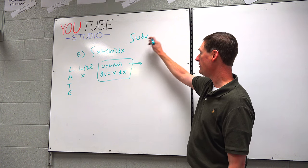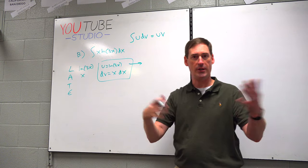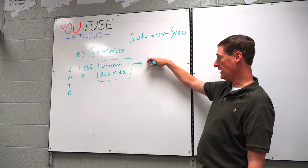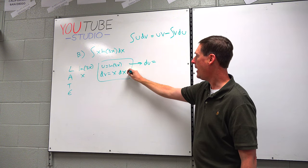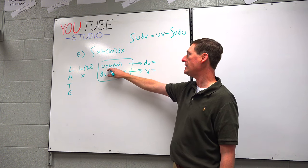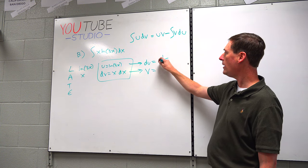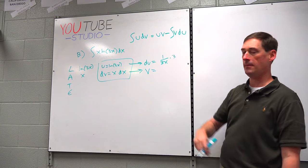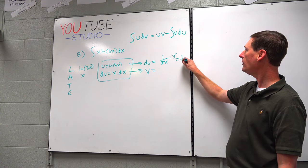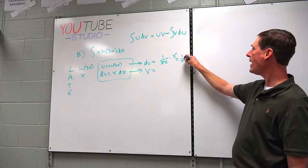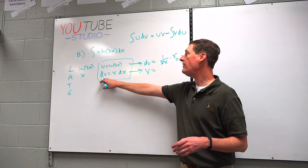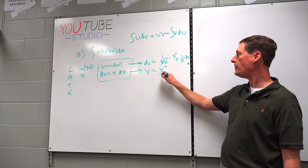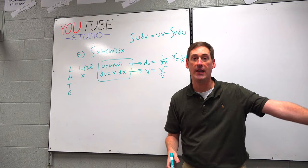The integration of u·dv is u·v — Mr. Wade's mortal enemy, UV rays — minus the integral of v·du. I need du from u and v from dv. If u is natural log of 3x, the derivative of u is 1 over 3x times chain rule 3, giving du equals 1 over x·dx — the 3s cross cancel. And dv equals x·dx, so v is x squared over 2 by the power rule.